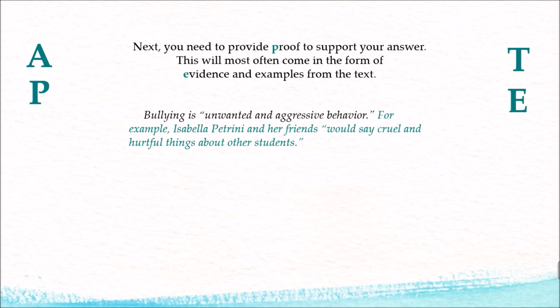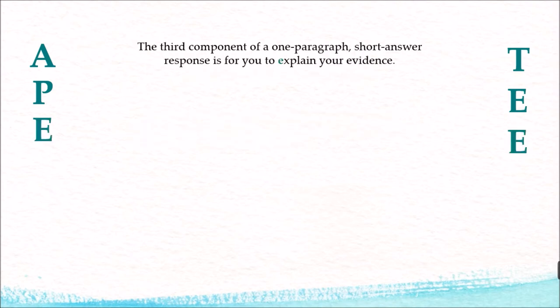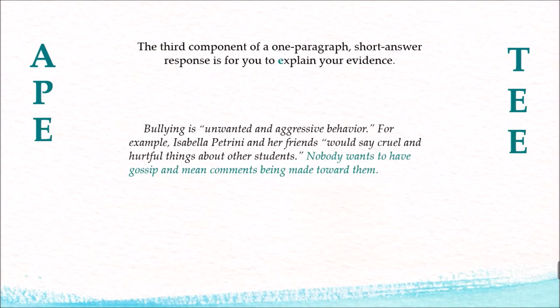Next, it's time to explain the evidence. 'Nobody wants to have gossip and mean comments being made toward them.' They're explaining how the example goes back to how bullying is unwanted — nobody wants to have mean things said about them. That's the E in both APES and the second E in TEAK.